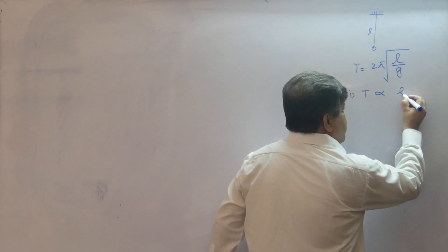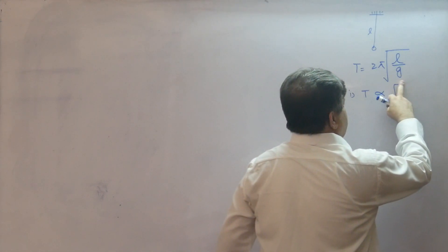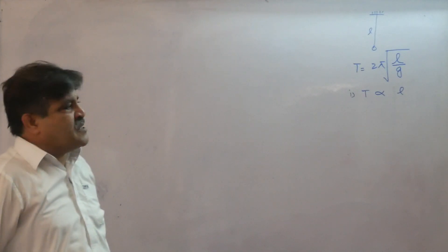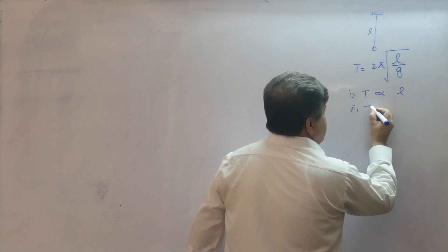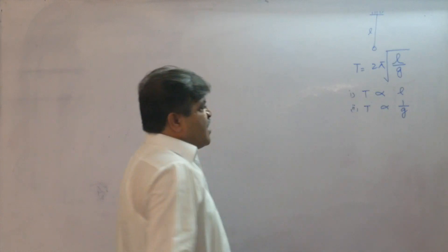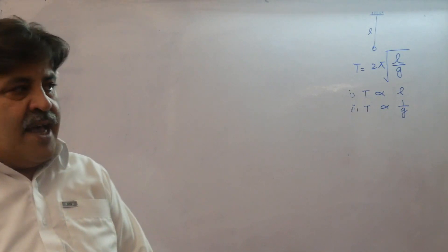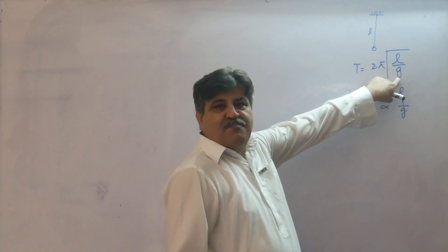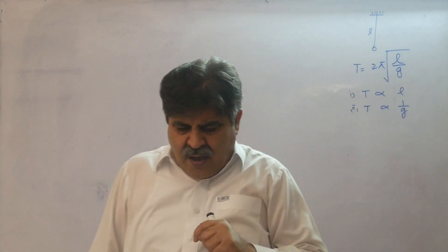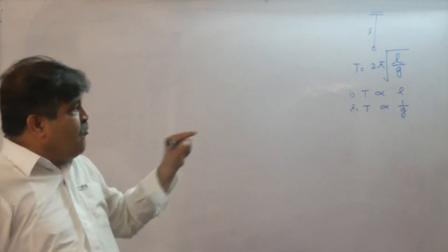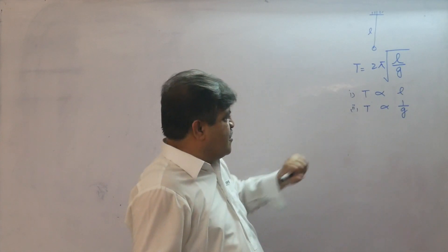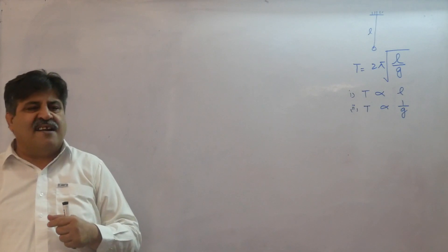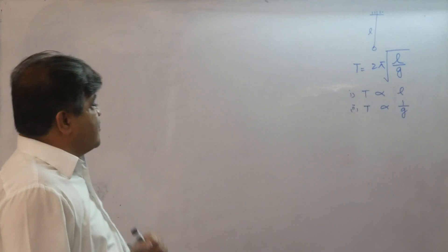You can analyze from this formula that the time period of a simple pendulum is directly proportional to the square root of its length - length is in the numerator - and inversely proportional to g since g is in the denominator. As length increases, time period increases; as g increases, time period decreases. The proof of this formula is not given in your book and I am not going to prove it here, as it requires first-year level mathematics.